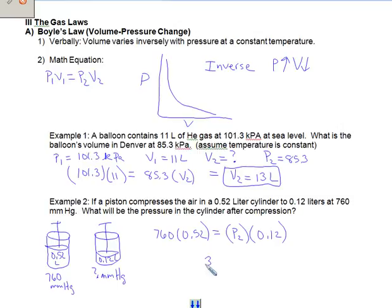you get 3,300 millimeters of mercury. And again, put a box around it so that everybody knows you're done.